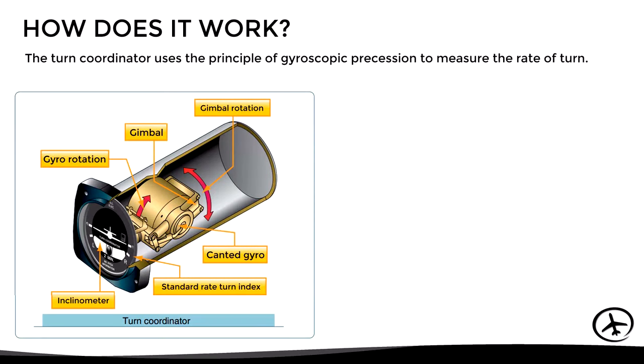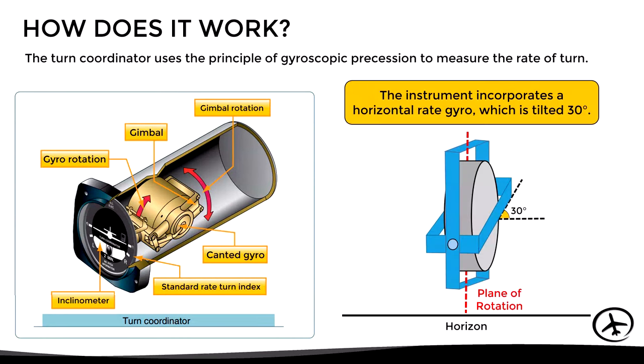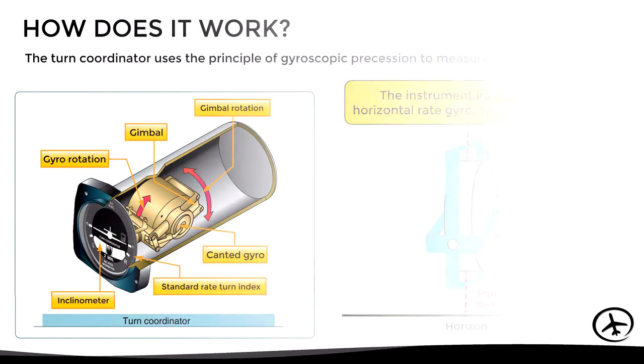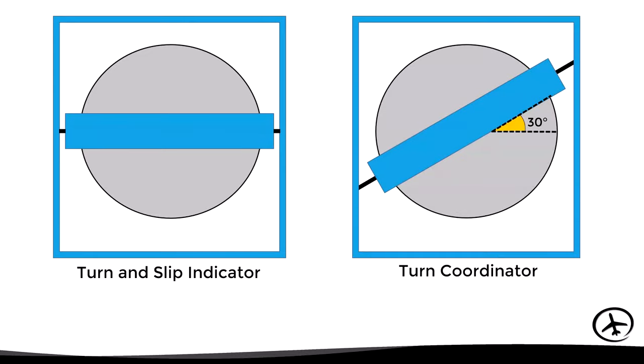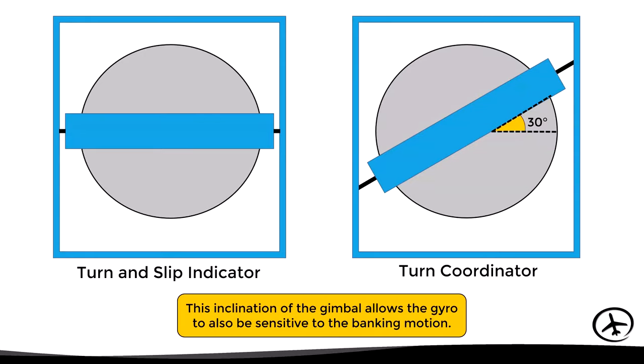As with the turn and slip indicator, the turn coordinator uses gyroscopic precession to measure the rate of turn, and it also incorporates a horizontal rate gyro. The key difference is that the gimbal is tilted 30 degrees. This inclination allows the gyro to also be sensitive to the banking motion — not only to heading changes. Apart from this, both instruments are practically identical.